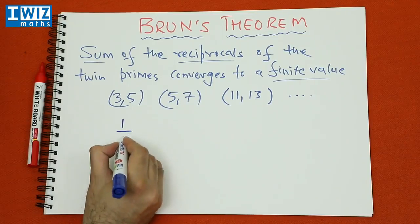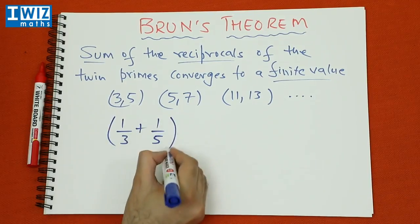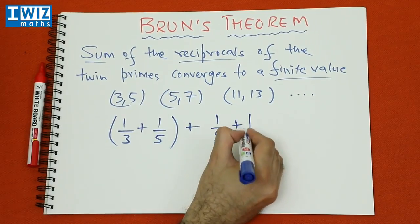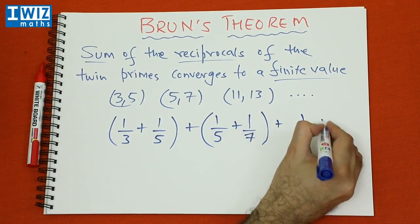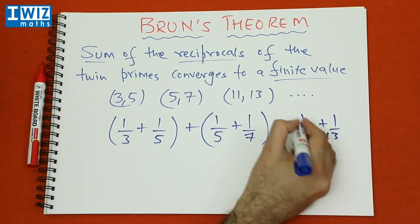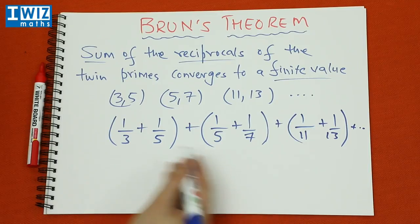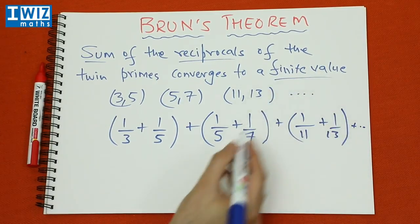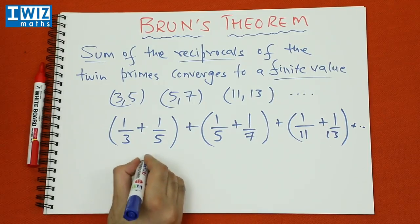So if you consider 1 upon 3 plus 1 upon 5 plus 1 upon 5 plus 1 upon 7 plus 1 upon 11 plus 1 upon 13 and so on, then this converges to a finite value and the finite value is now known as Brun's constant.